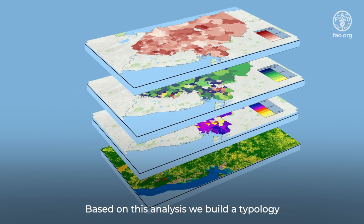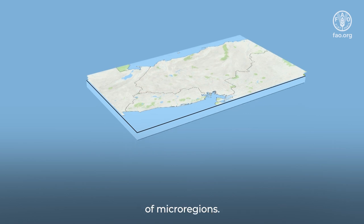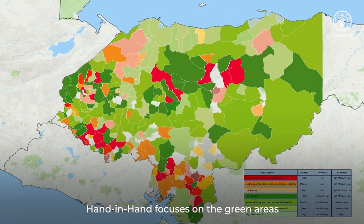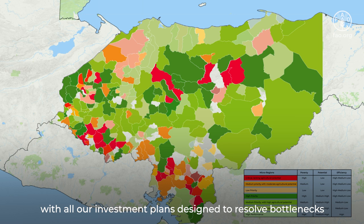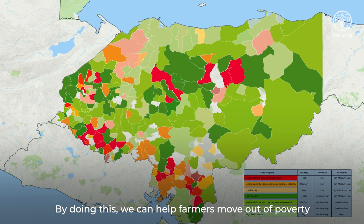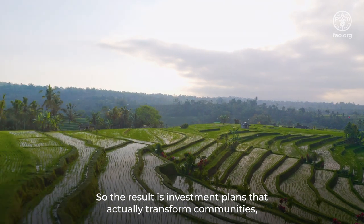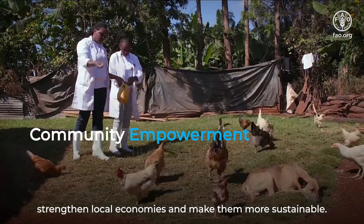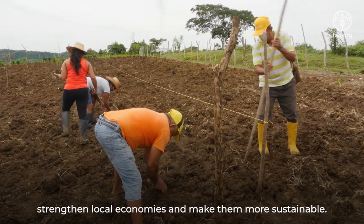Based on this analysis, we build a typology of micro-regions — for example, Typology Honduras. Hand in Hand focuses on the green areas where we know there is agricultural potential, with all our investment plans designed to resolve bottlenecks that farmers are facing in order to unleash their potential. By doing this, we can help farmers move out of poverty in a sustainable way, resulting in investment plans that actually transform communities, strengthen local economies and make them more sustainable.